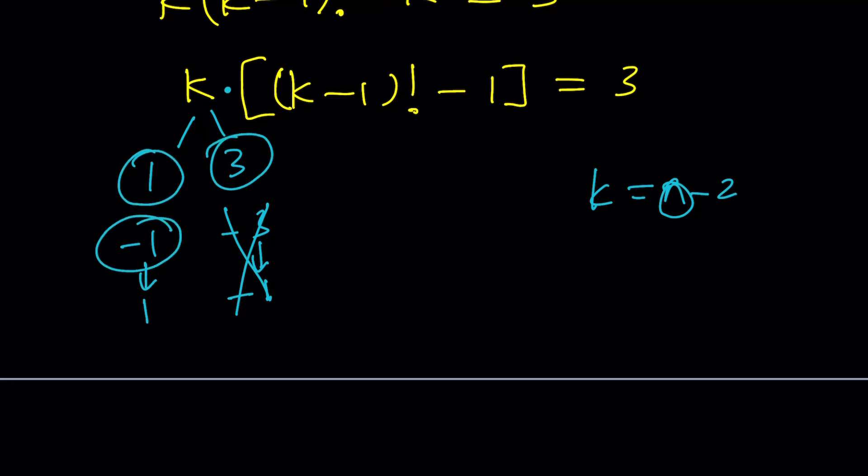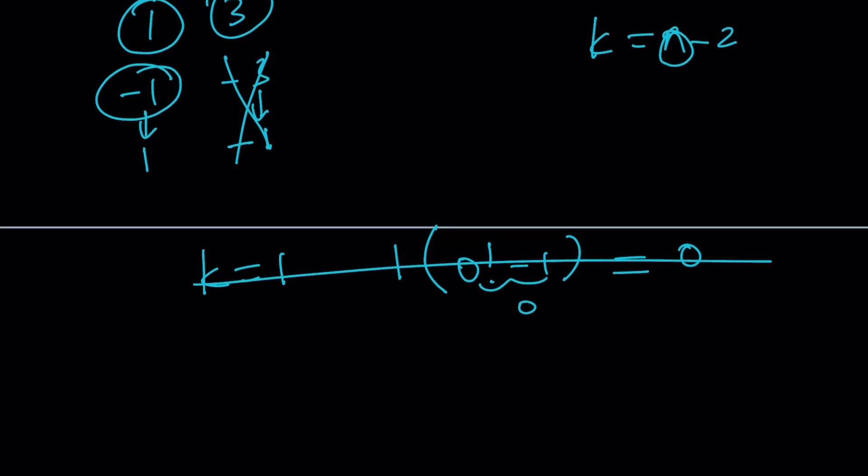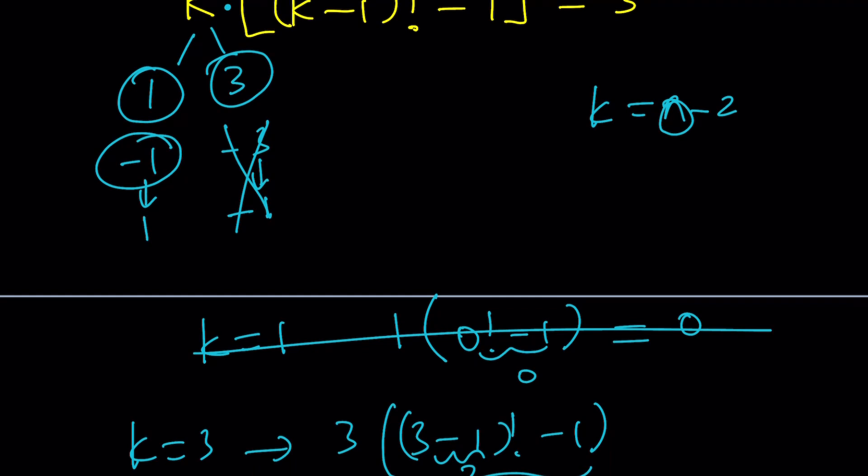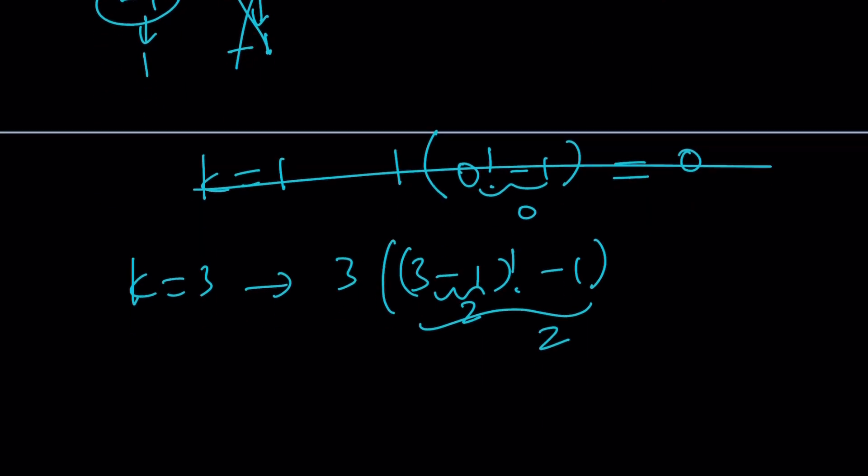So, those are the k values that might work. If k is equal to 1, then we get 1 times 0 factorial minus 1. That is 0, 1 times 0, which is 0. That's not going to work. Too bad. What about k equals 3? Let's test it out. 3 times 3 minus 1 factorial minus 1, and 3 minus 1 is 2, 2 factorial is 2, 2 minus 1 is 1, 3 times 1 is 3. Yes. k equals 3 works.